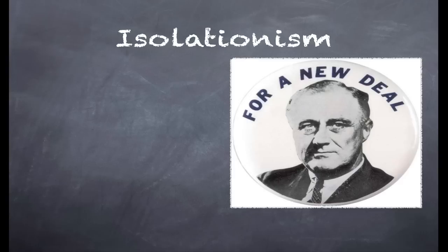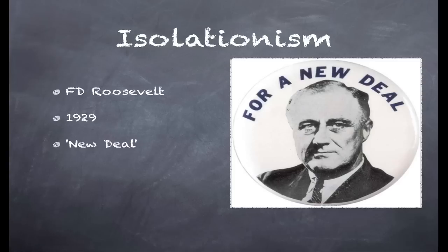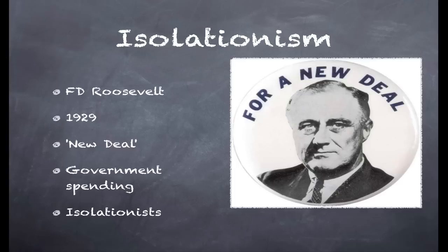As a consequence, the isolationism of the United States increased. President Roosevelt was elected in 1932 in America and he promised the so-called New Deal — he was going to spend a lot of government money on big government projects to try and get the economy working again. However, he could only get the American government to agree to this if he sided with the isolationists. So as a consequence, the United States really focused nearly all of its attention on dealing with problems inside the USA and was more isolationist, less concerned with world affairs.